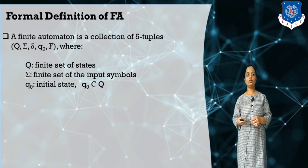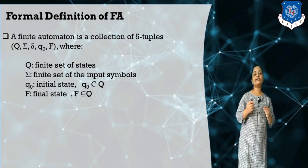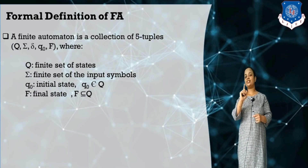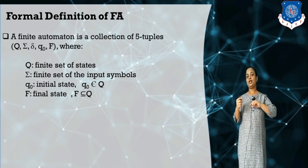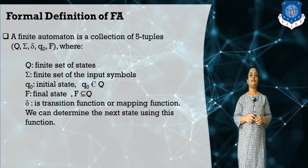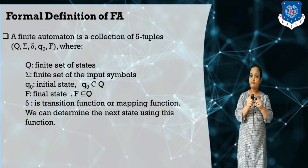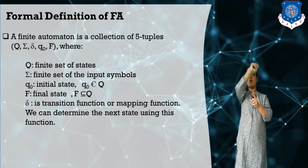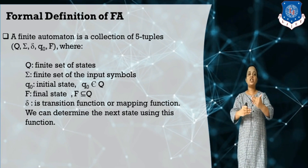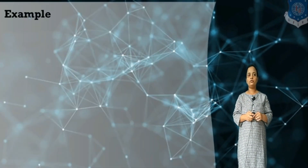F indicates the set of final states and is always a subset of Q. Remember: the initial state is always a single state, but the set of final states may contain one or more states. Delta is the transition function — the most important element. This function defines the transitions: moving from one state to another state or staying at the same state. It is called a mapping function and determines the next state.